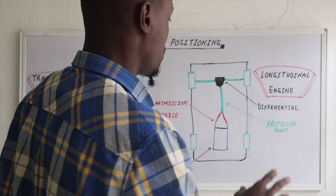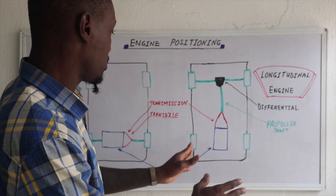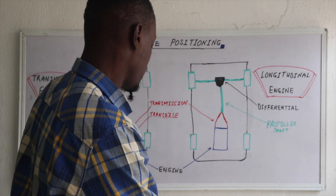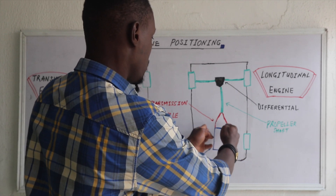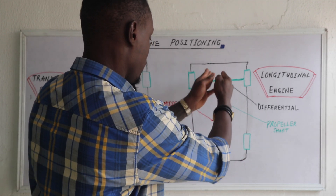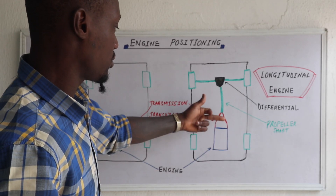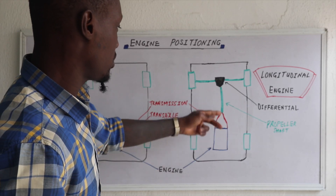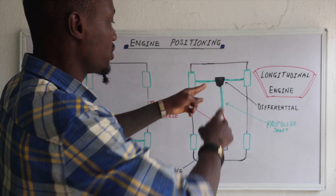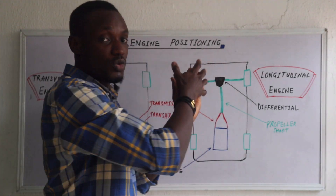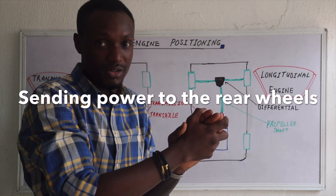For the longitudinal engine position, when standing in front of the vehicle we have the engine going in a straight line from the middle to the rear of the vehicle. We have the engine, then the transmission, then the propeller shaft, then the differential and drive shaft sending power to both rear tires of the vehicle.